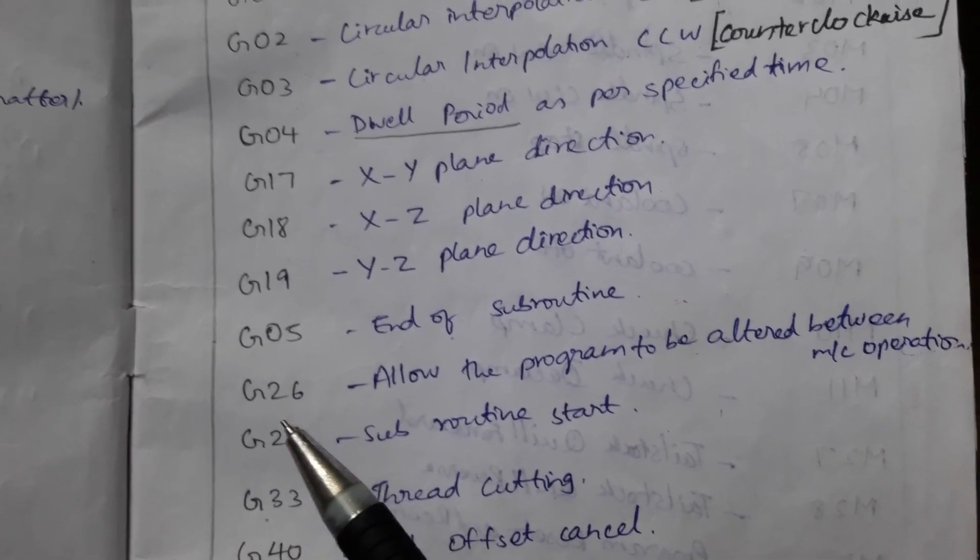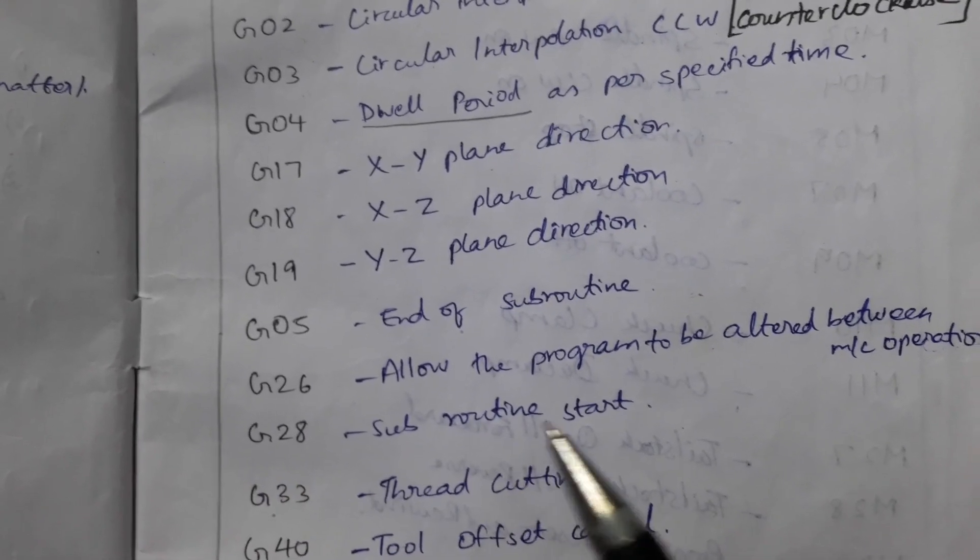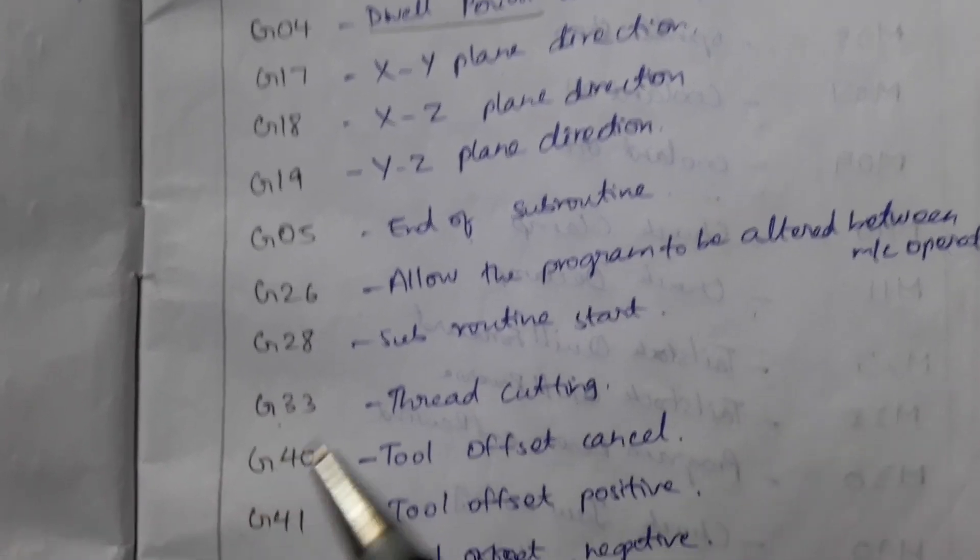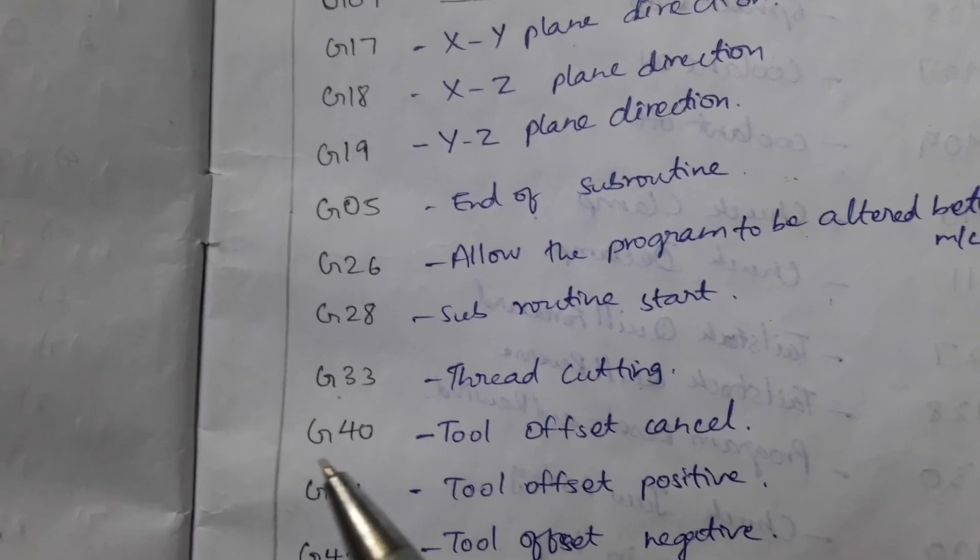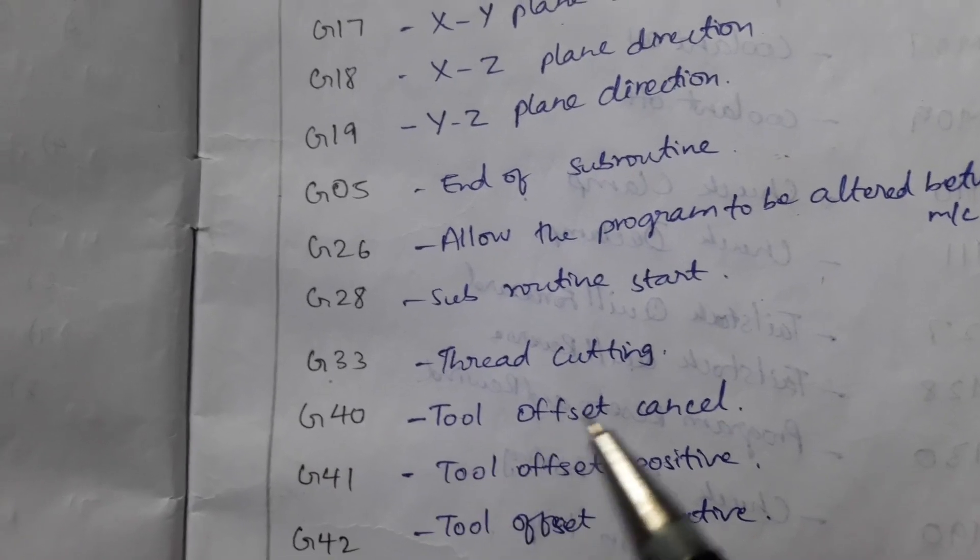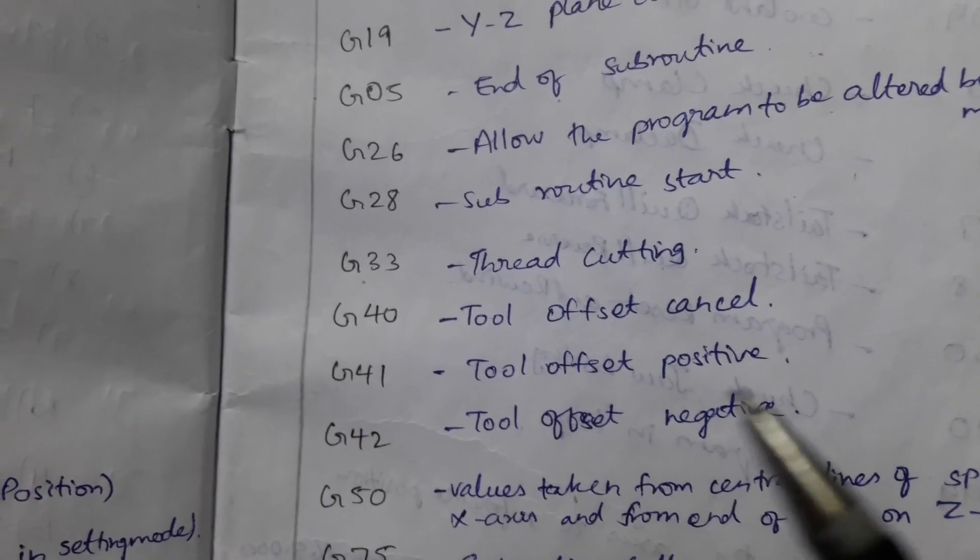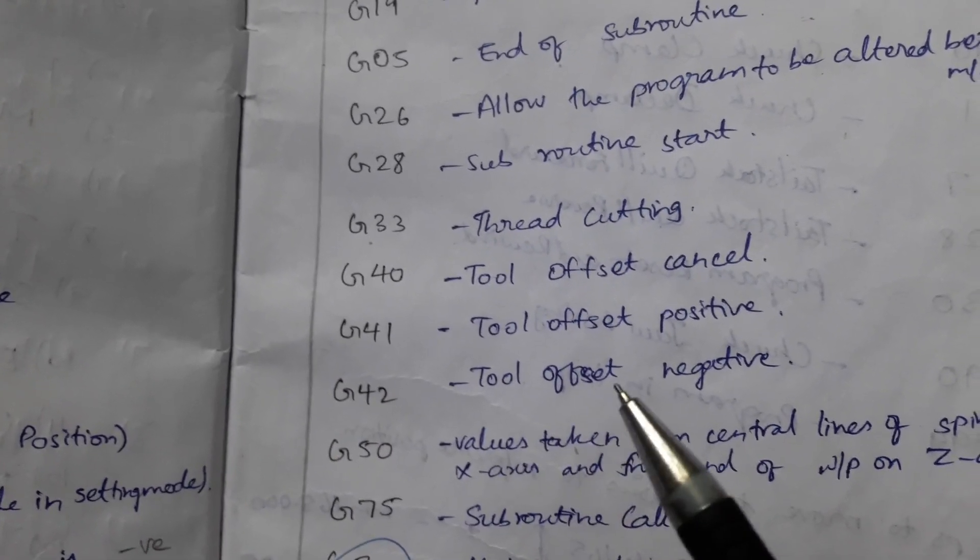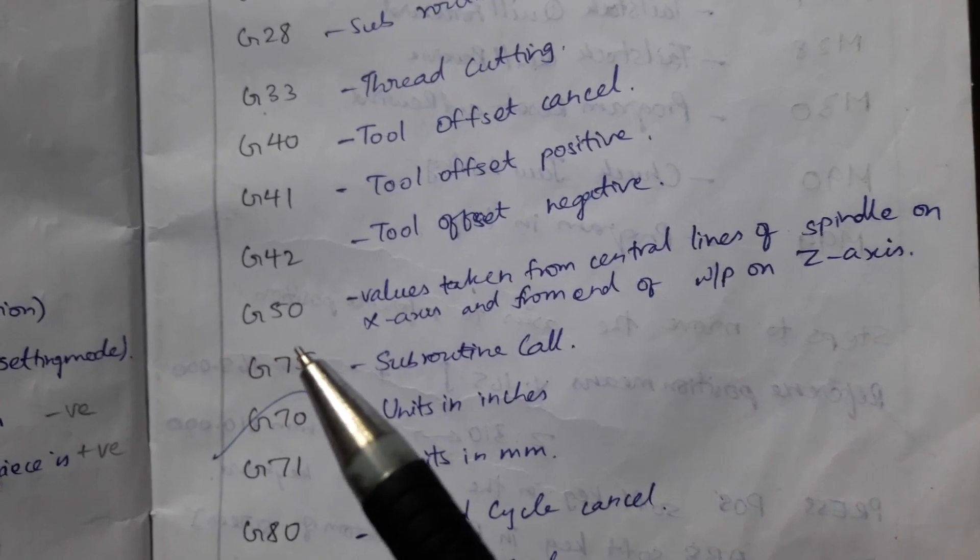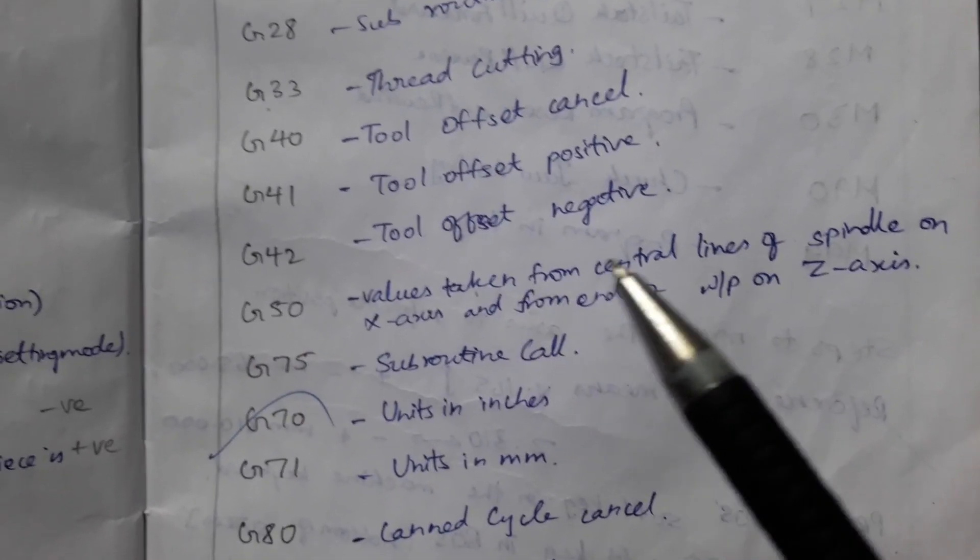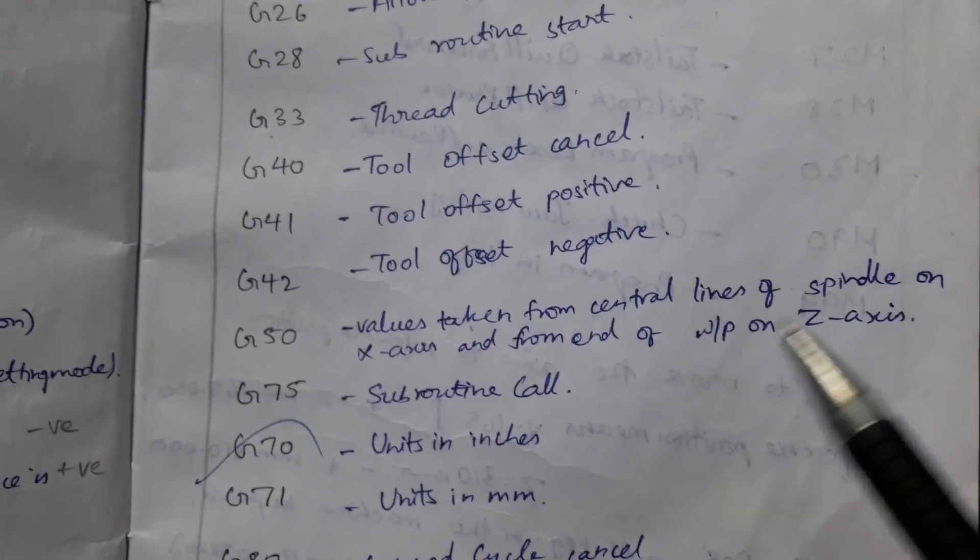He uses the command G26. G28, subroutine start. G33 to cut threads, this command is used. G40, tool offset cancel. G41, tool offset positive. G42, tool offset negative. G50, values taken from the central lines of the spindle on X-axis and from end of the workpiece on Z-axis.